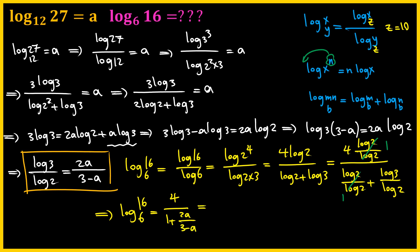And then to simplify this fraction, I'm going to multiply both the top and the bottom by (3 minus a). So we get 4 times (3 minus a) divided by (3 minus a) plus 2a, which simplifies to (12 minus 4a) divided by (a plus 3). And that means that we evaluated log 16 with base 6 in terms of a.